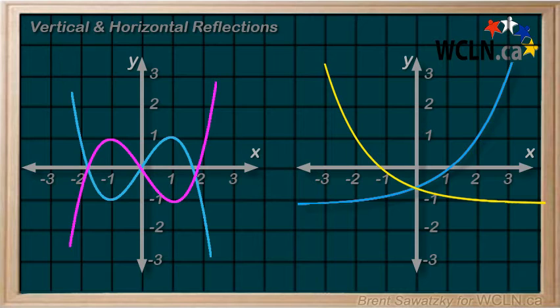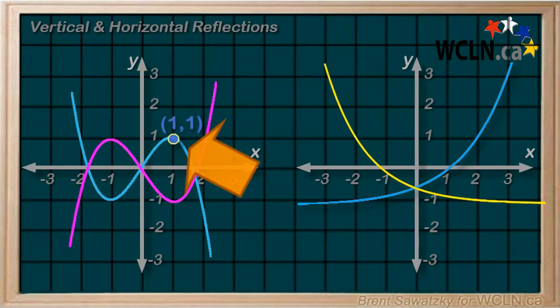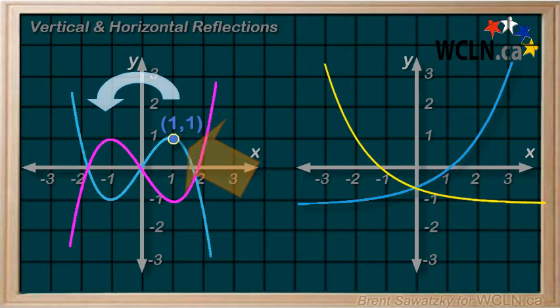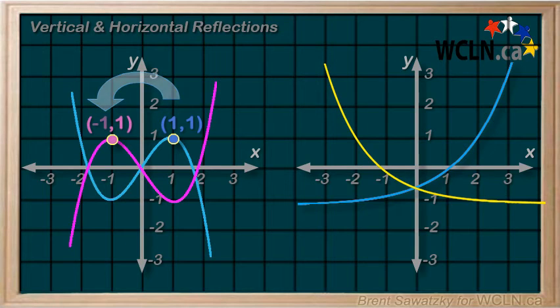For example, this point here, 1, 1 becomes, well, the y stays the same, so a 1 here, and then the sign is switched for the x value. That is, plus 1 becomes negative 1. And they are reflected around the y axis.